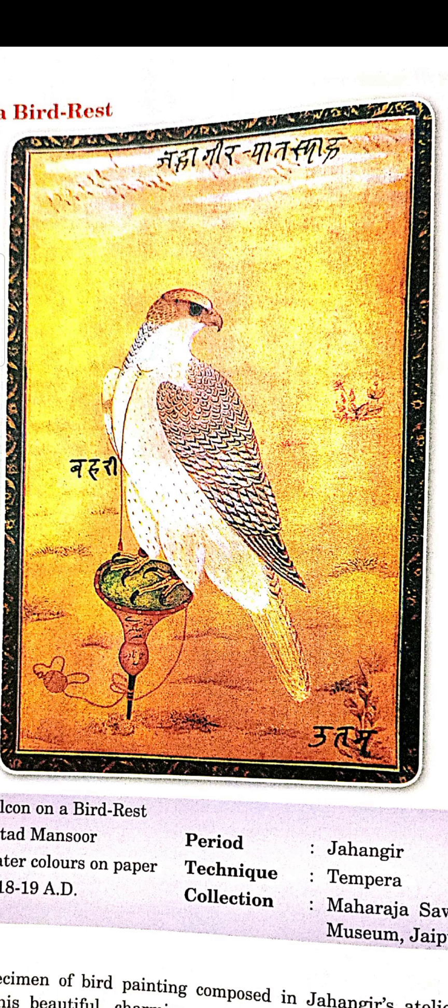Jahangir ko pakshiyon ko palne ka aur daanak lane ka bahut adhik shauk tha. Woh pakshiyon se aur prakriti se bahut adhik prem karta tha. Uske time period mein prakriti chitra rachnaen bahut adhik hui hain. Jahangir ki patni Nur Jahan bhi swayam prakriti premi thi, aur Jahangir ke time period mein — jaise bacchon aapne history mein bhi padha hoga — gardens bahut adhik banai gayi.